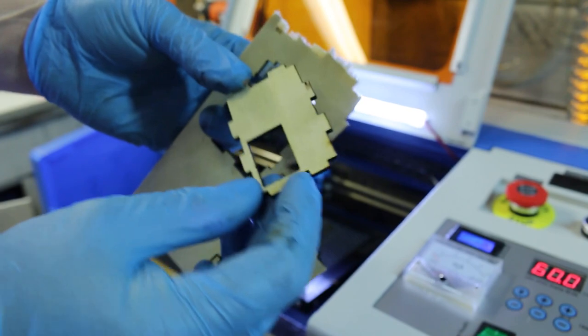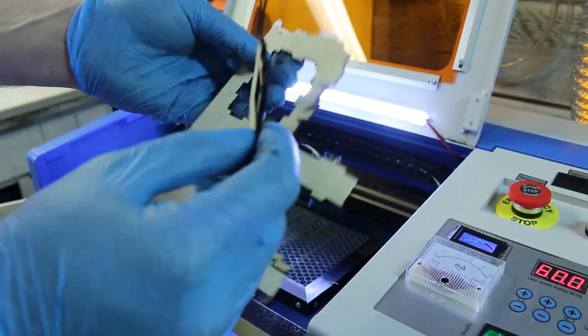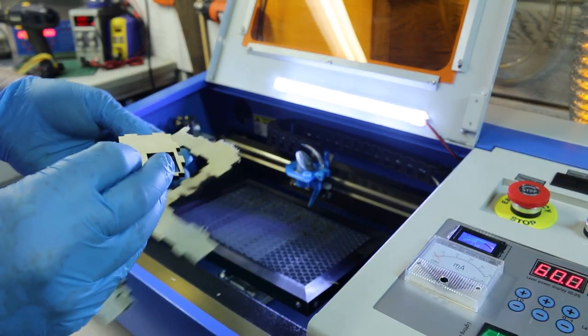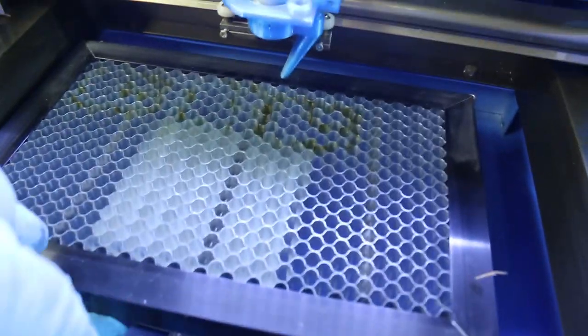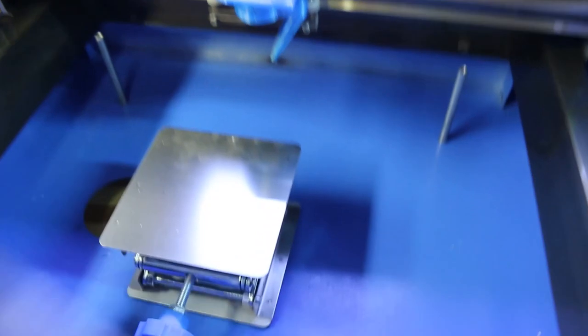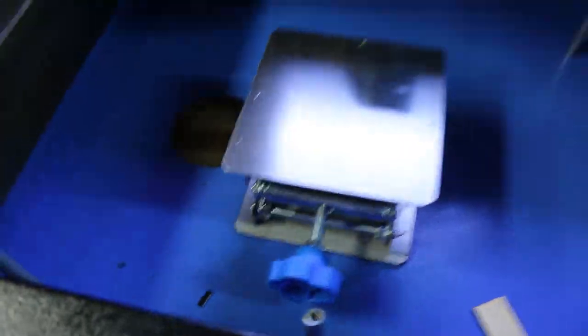The bed installation was super simple. All the little vertical standoffs are just screwed in from the bottom of the laser cutter. I simply removed all those and then removed the existing plate that I had already installed,